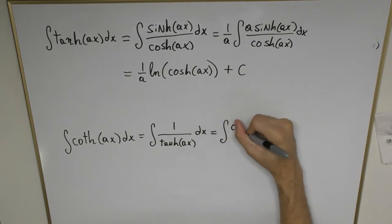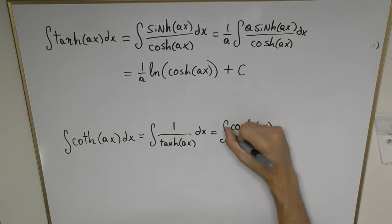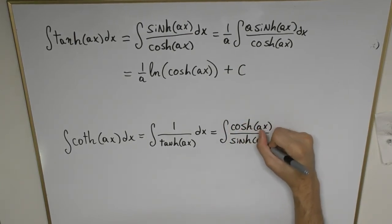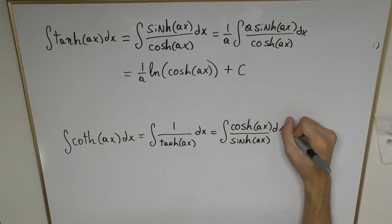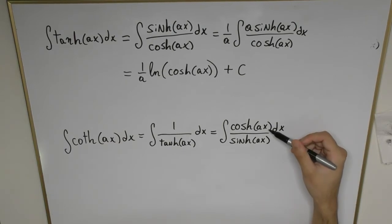That's going to be the same as cosh(ax) divided by hyperbolic sinh(ax). We're going to apply the same logic as before. We notice that the numerator is the derivative of the denominator except there's a missing factor of a in it.